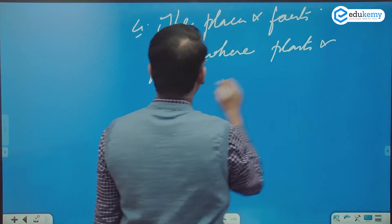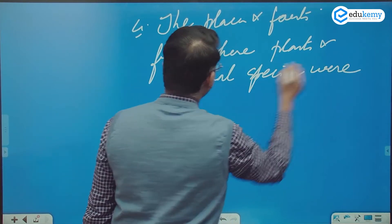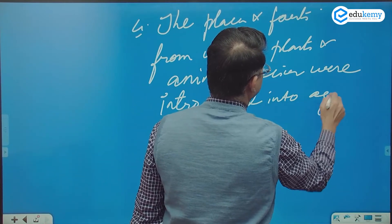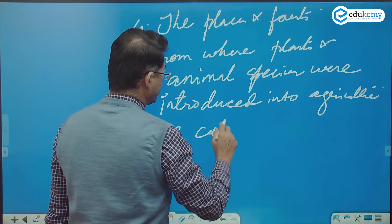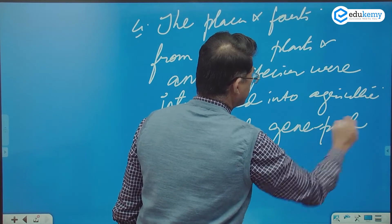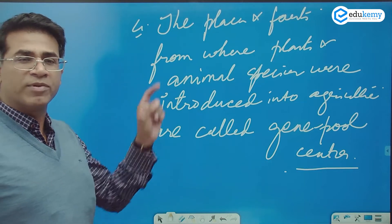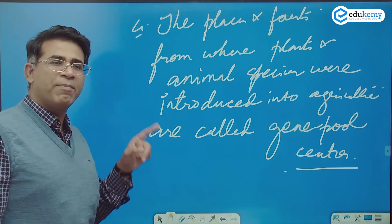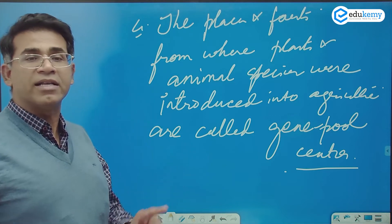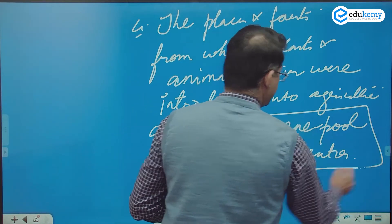The places and forests from where plants and animal species were introduced into agriculture are called gene pool centers. They are called gene pool centers.